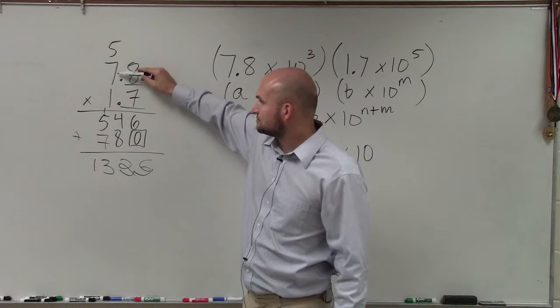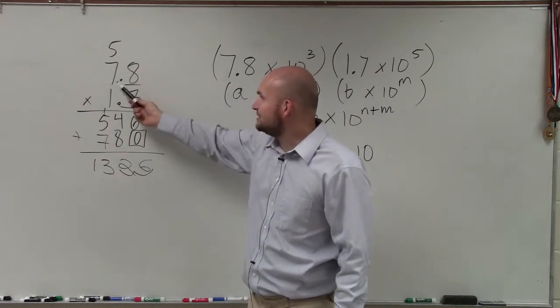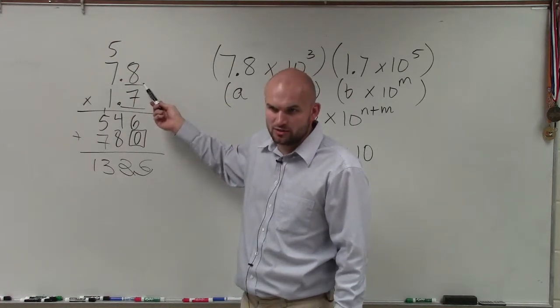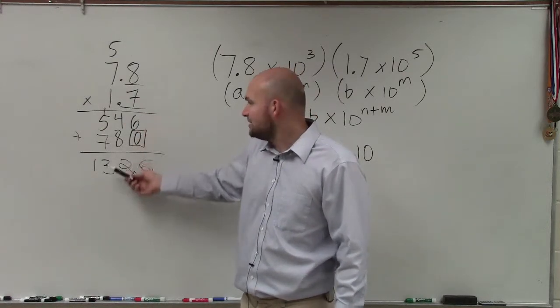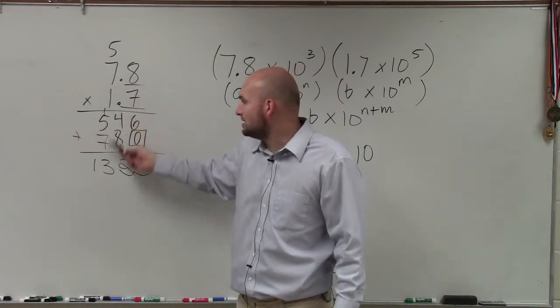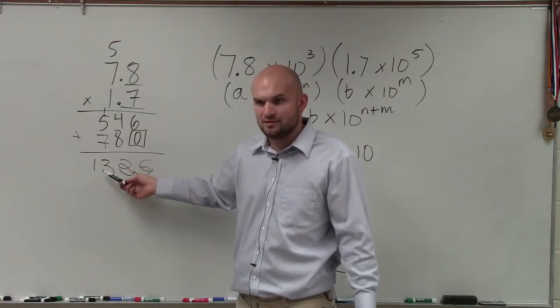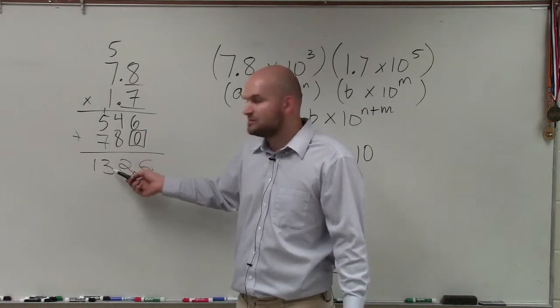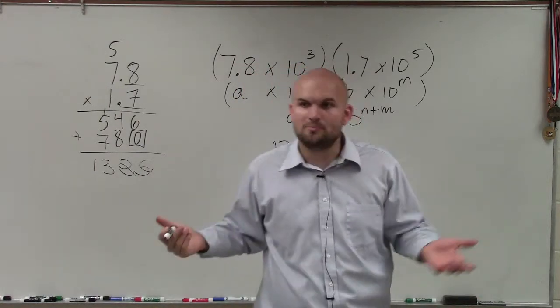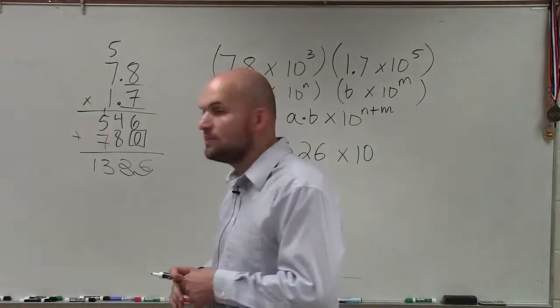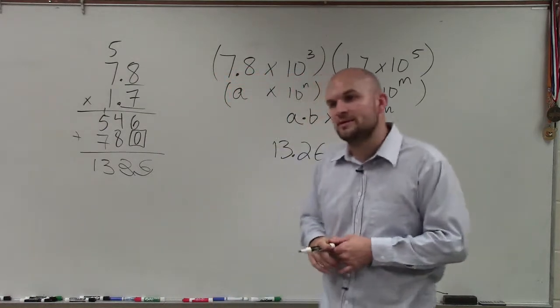Think about this. Basically, this is 7 and part of a whole, and 1 and part of a whole. It wouldn't make sense for 7 times 1 to give us 1,000. It wouldn't make sense for it to be 100. 7 times 1 is just 7, and then you can see these parts of a whole. So basically, it would make sense when it's right around 13.26. Make sense?